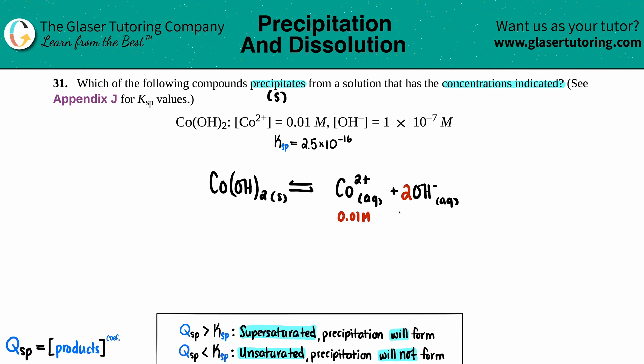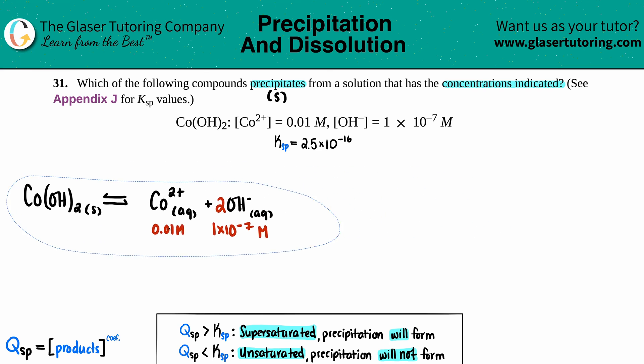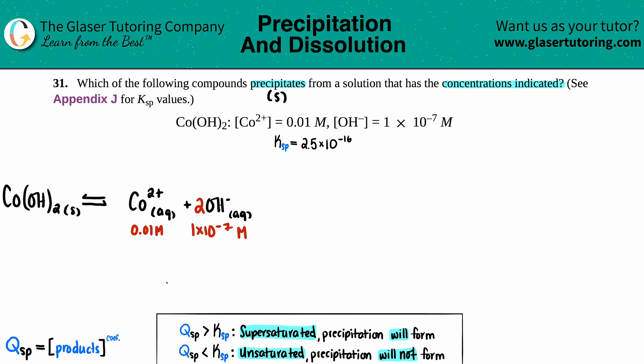The 2 is just in terms of the balanced equation, so this would still be 1×10^-7 M. We're going to use this equation to find our Q value. The Qsp is the same equation as the Ksp.